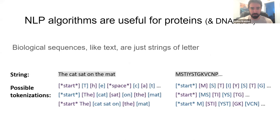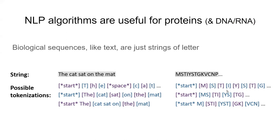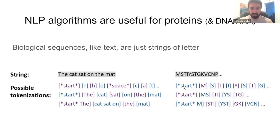Going back to biology, if you want to apply these models to molecular biology, there is one key insight: biological sequences — whether proteins, DNA, or RNA — are very much like text. They're just strings of letters. In an English sentence we could break it down to letters or words; in the case of proteins, we could break it to amino acids. In both cases, just a string of tokens. Therefore, we could use the exact same algorithms.